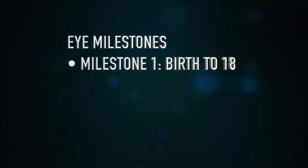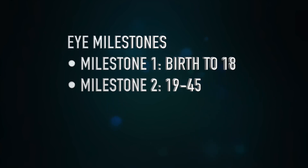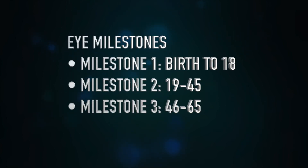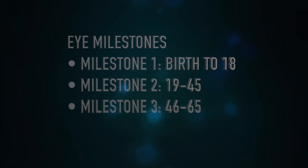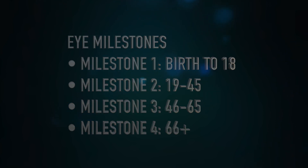Milestone one is age birth to 18. Milestone two is age 19 to 45, when your prescription is stable and the lens of your eyes is flexible. At age 46 to 65, the prescription is stable but the lens is inflexible. And at age 66 and above, the prescription may shift as your lens becomes cloudy.